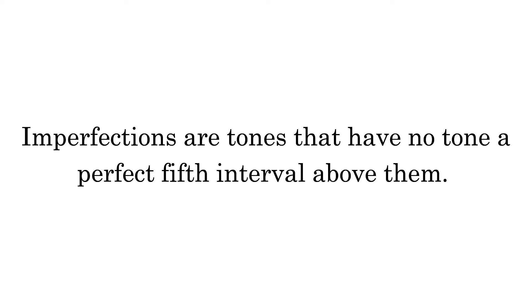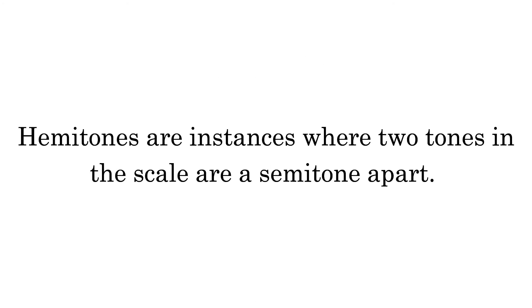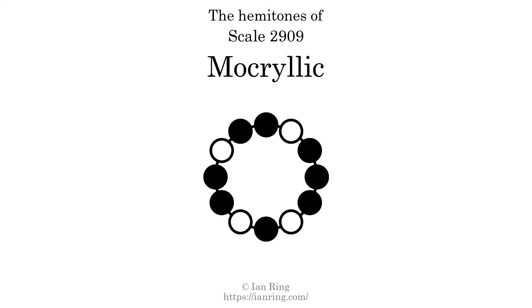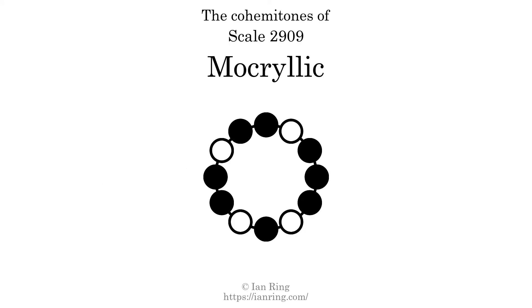Imperfections are tones that have no tone a perfect fifth interval above them. This scale has three imperfections, at positions here, here, and here. Hammertones are instances where two tones in the scale are a semitone apart. This scale has four hammertones, at positions here, here, here, and here. Co-hammertones are instances where two hammertones are beside each other. This scale has one co-hammertone, here.